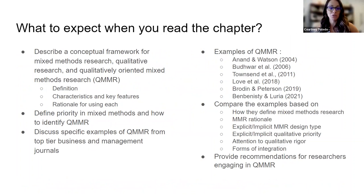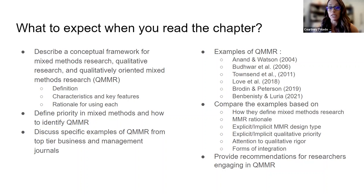When you read our chapter, this slide shows a few of the things you can expect. We'll start with describing a conceptual framework, including how we define qualitatively oriented mixed methods research, some of the characteristics, and the rationale for why you might use these approaches. We'll also define priority in mixed methods, including how you might identify a study that uses qualitatively oriented mixed methods. We'll go over examples from top-tier business journals and compare how they define mixed methods and whether their study explicitly or implicitly demonstrates the design type and qualitative priority. We'll finish with recommendations for researchers.